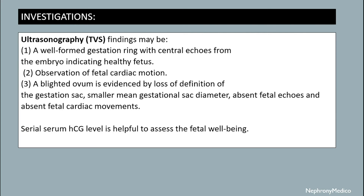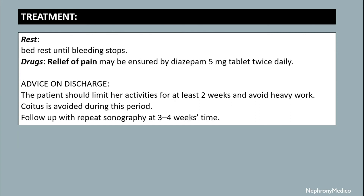Ultrasonography findings may show a well-formed gestational ring with central echoes from the embryo, indicating a healthy fetus. Observation of fetal cardiac motion is important. A blighted ovum is evidenced by loss of definition of the gestational sac, gestational sac diameter greater than expected, absent fetal echoes, and absent fetal cardiac movements. Serial serum hCG levels are helpful to assess fetal well-being.